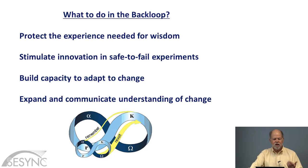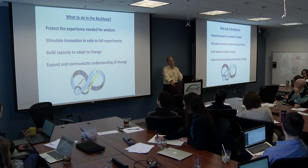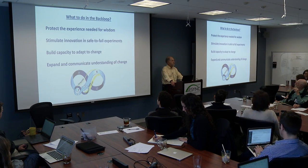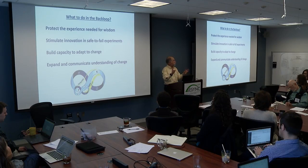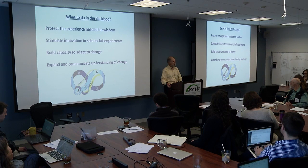So our initial thinking — the kinds of things we would talk about in workshops in the early 2000s — were things like: protect the wisdom, the experience that you're going to need to make wise choices, basically protect the memory you need to reorganize. Experiment, but not in a dangerous and potentially catastrophic way — try to find safe options for experimentation where if it fails it's okay, but if it works maybe there's a big payoff. Build capacity for adaptation, talk a lot about complexity, expand and communicate an understanding of change, and try to get diverse people thinking about the complex problem that the system faces.